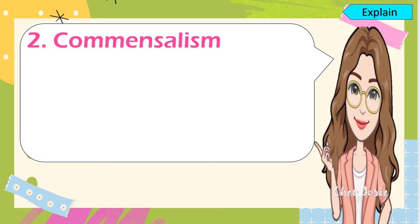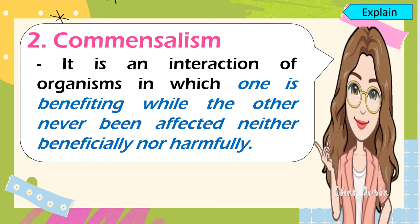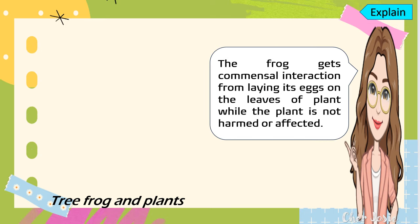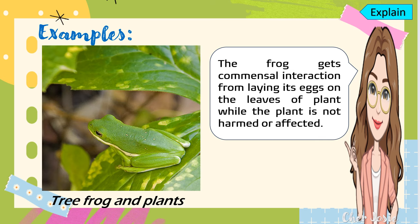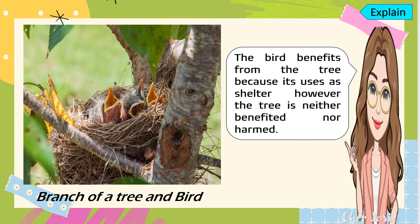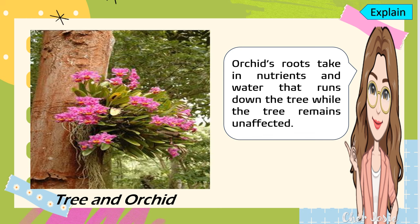The second type of beneficial interaction is commensalism — an interaction of organisms in which one is benefiting while the other is neither affected nor harmed. For example, the tree frog and plants: the frog gets a commensal interaction by laying its eggs on the leaves of the plant, while the plant is not harmed or affected. Another example is a branch of a tree and a bird: the bird benefits by using the tree as shelter, but the tree is neither benefited nor harmed. The last example is a tree and an orchid: the orchid's roots take in nutrients and water that run down the tree, while the tree remains unaffected.